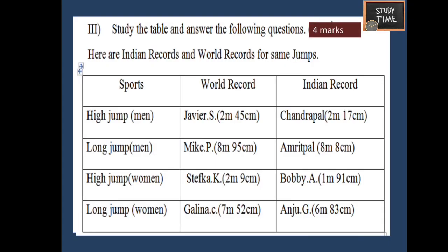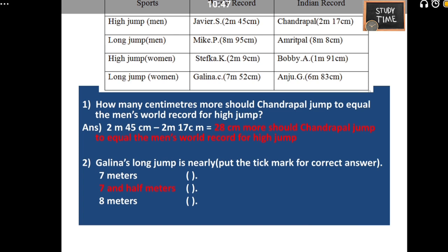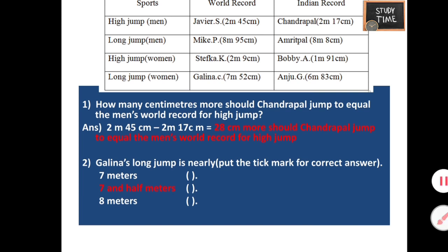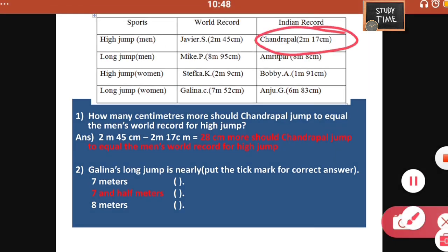Here is a table and you have to answer the questions from it. How many centimeters more should Chandrapal jump to equal the men's world record for high jump? You subtract 2 meters 45 centimeters from 2 meters 17 centimeters — 45 minus 17 is 28 centimeters more. Galiana's jump is nearly 7 and a half meters.